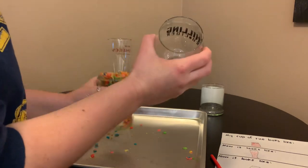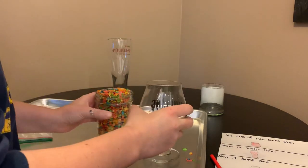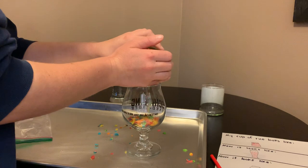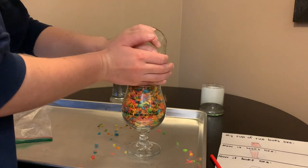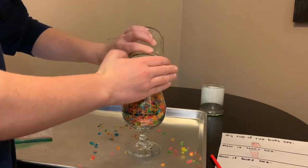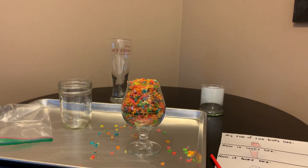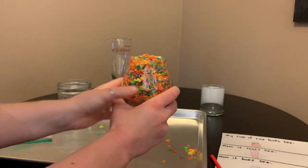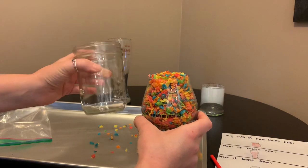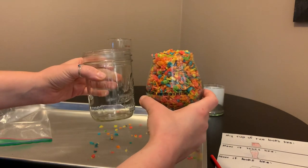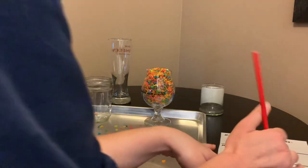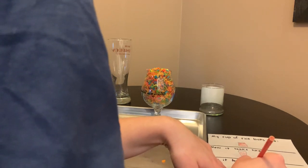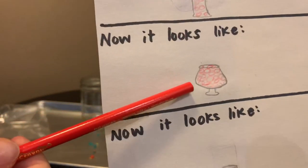Also, the top — the rim — is a little bit smaller than the top of this jar. Whoa, the fruity pebbles look round like the glass. Look at that! This glass also holds the same amount of fruity pebbles as this one. So the volume of this glass is the same as the volume of the jar, because they can hold the same amount inside. Now I've got to put that on my recording sheet — I'm going to draw that the fruity pebbles filled up the round glass. The round glass can hold all of the fruity pebbles.